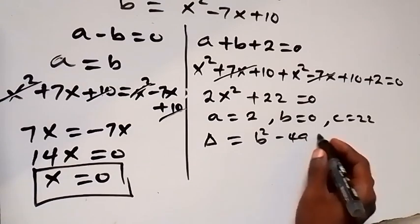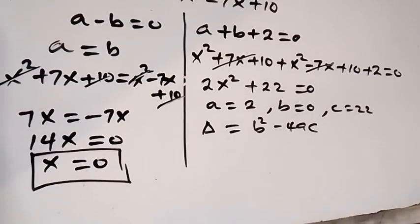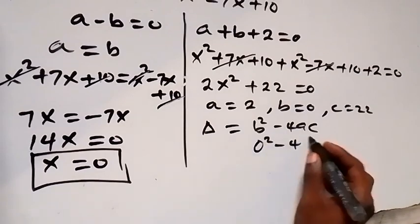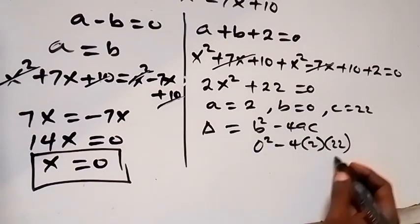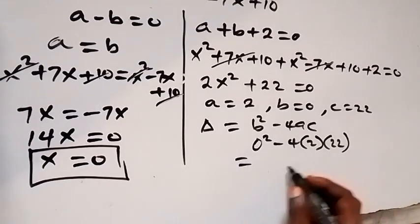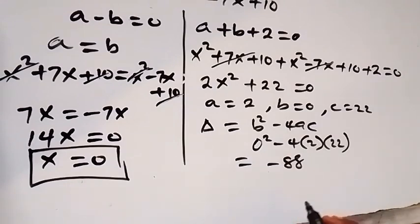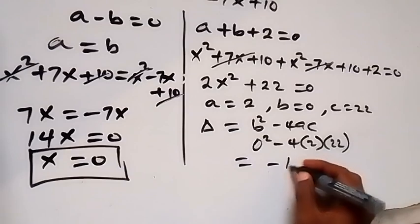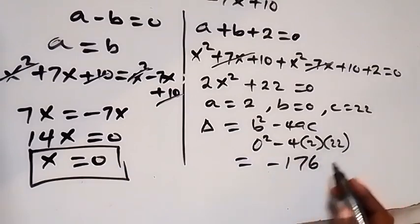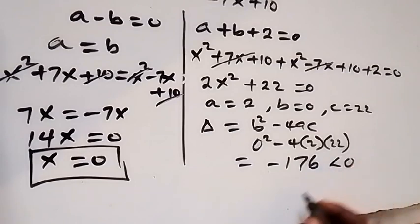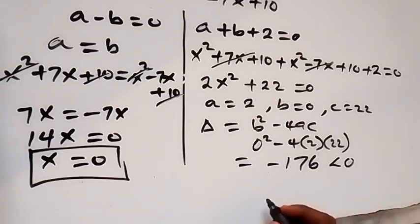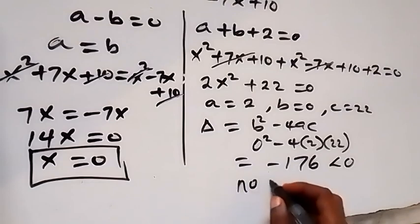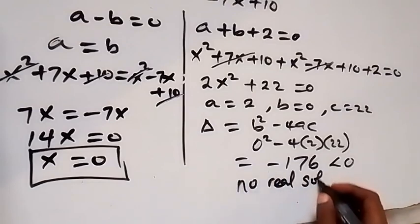We check the discriminant: b² − 4ac = 0² − 4(2)(22) = 0 − 176 = −176. Since the discriminant is less than 0, this gives imaginary (complex) roots — so there is no real solution from this case.